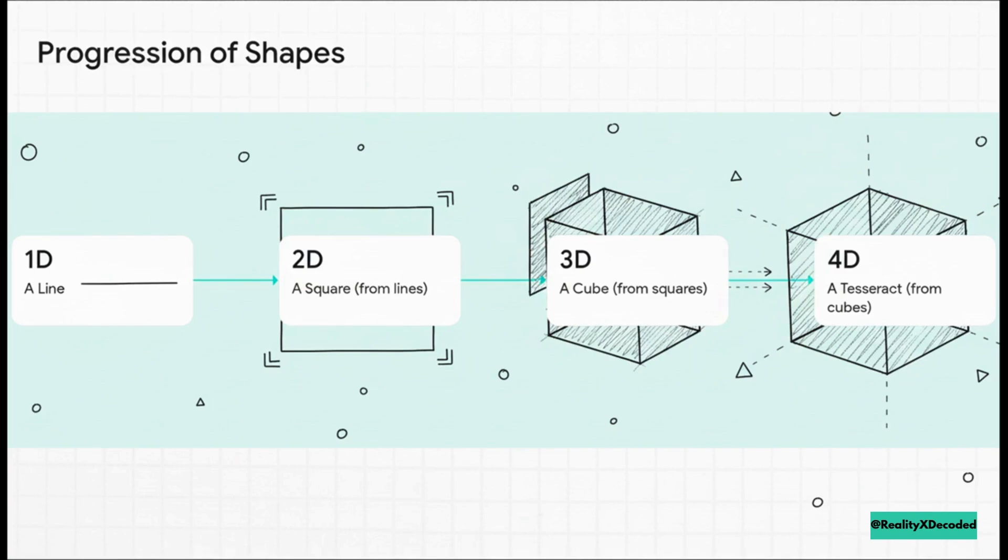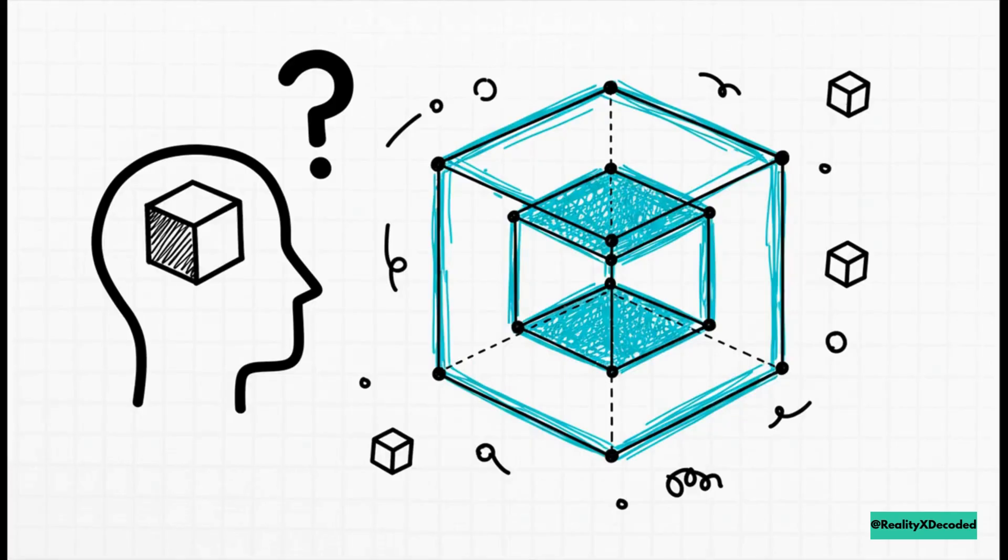So, what's next? Logically, you take eight cubes and connect them so that all their adjacent sides are perpendicular. And you get the next shape in the sequence, a tesseract. A tesseract is basically the four-dimensional version of a cube. It's a shape that follows all the mathematical and logical rules that we've been building up.